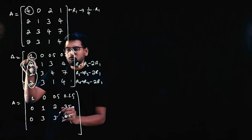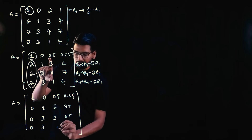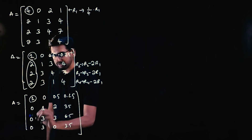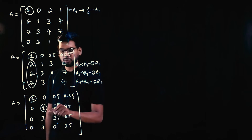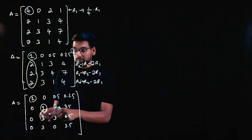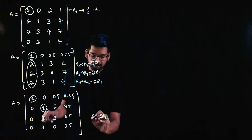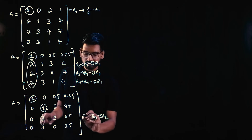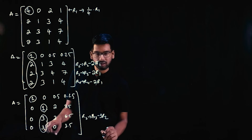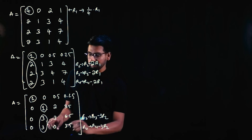Now we have used the first pivot to make these three elements zero. Next, we use the second element of the second row — already 1 is there — to make the elements below it zero. For R3: 3 minus 3×1 = 0, so do R3 minus 3×R2. Similarly for R4: 3 minus 3×1 = 0, so do R4 minus 3×R2.